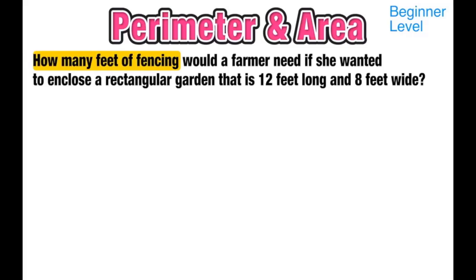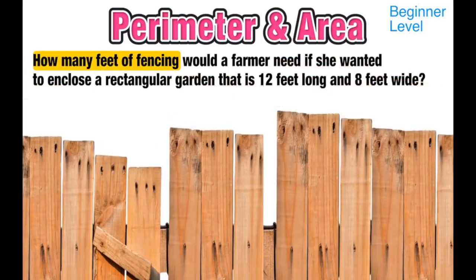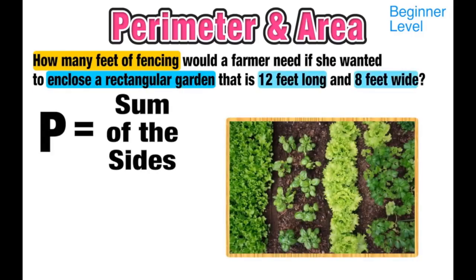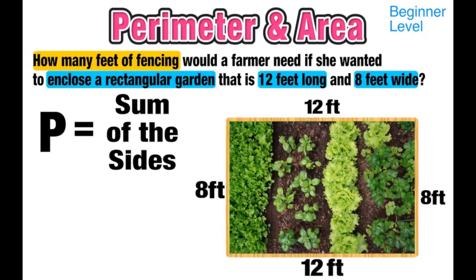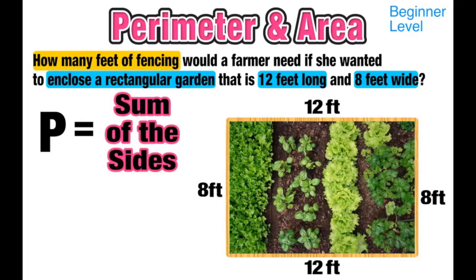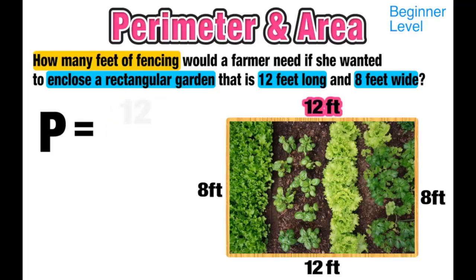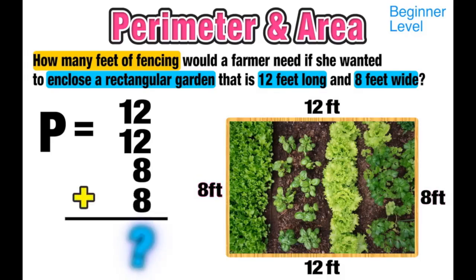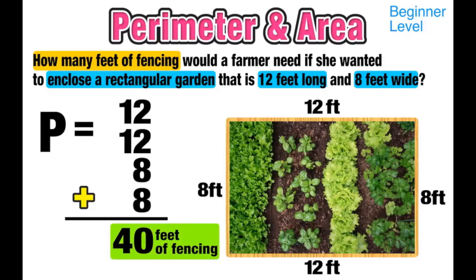For our first example: how many feet of fencing would a farmer need if she wanted to enclose a rectangular garden that is 12 feet long and 8 feet wide? Fencing only goes around the outside, so this is a perimeter question. I label the diagram — length is 12 feet, width is 8 feet — and because it's a rectangle, opposite sides are the same. Adding 12 plus 12 plus 8 plus 8 gives a perimeter of 40 feet of fencing.